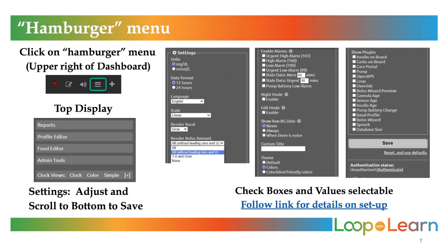Going back to our dashboard, on the upper right there is what we call the hamburger menu. This menu contains links to NightScout reports, the profile editor, food editor, admin tools, and clock views. Mainly, here you will find settings, alarms that can be turned on or off, basal view options, plugins that can be turned on or off, and the save button. We will also discuss this further in a future video. Depending on how you set up your site, yours might look slightly different. You'll find the link to NightScout customizations in the links below.